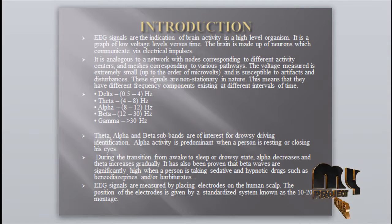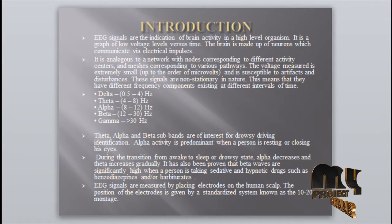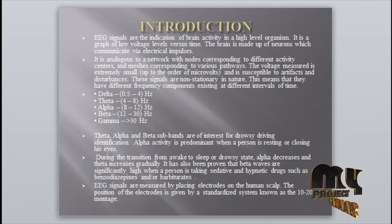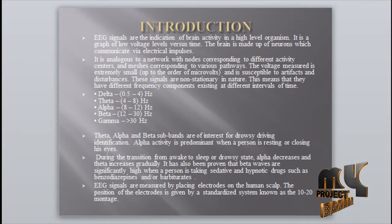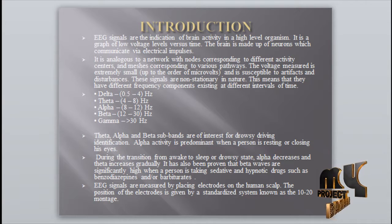Introduction: EEG signals are indicators of brain activity in high-level organisms. It is a graph of low voltage level versus time. The brain is made up of neurons which communicate via electrical impulses, analogous to a network with nodes corresponding to different functional areas. The signals are extremely small, in the range of microvolts, and susceptible to artifact.